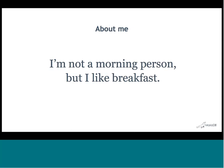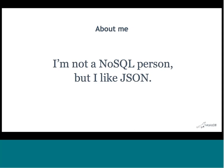Personally speaking, this statement couldn't be truer. I absolutely love breakfast — pancakes, biscuits and gravy, bacon. Unfortunately, I'm also not a morning person. I get up just in time to shower and jump in the car and head to the office, which presents a little bit of a conundrum. The same could be true when talking about relational and JSON. You could have the perspective: I'm not a NoSQL person, but I like JSON. Historically, it's been an either-or situation — structured data with relational, or semi-structured with NoSQL — but I'm not sure it's a choice you should have to make.